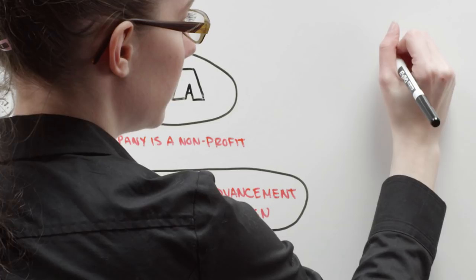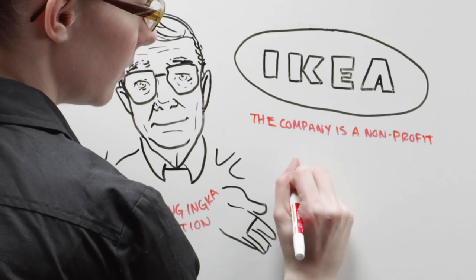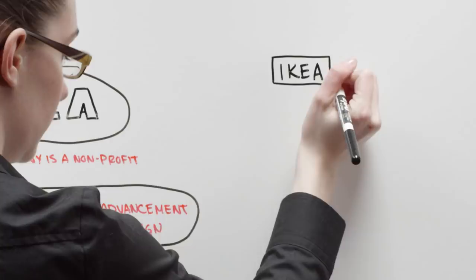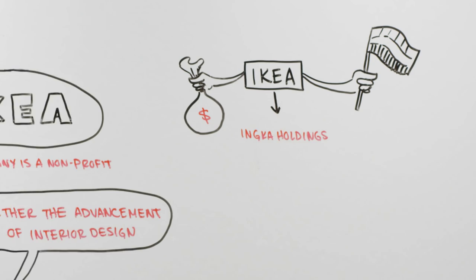IKEA's bizarre business model looks like this. The non-profit Stichting Inka owns a private Dutch company, Inka Holdings, that owns the majority of individual stores at the franchise level. The company's main motivation for having a non-profit structure seems to be business-driven.